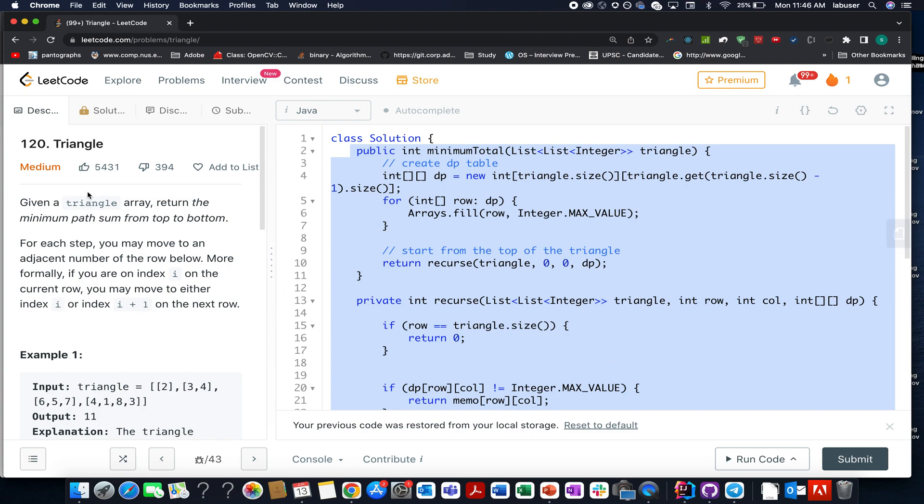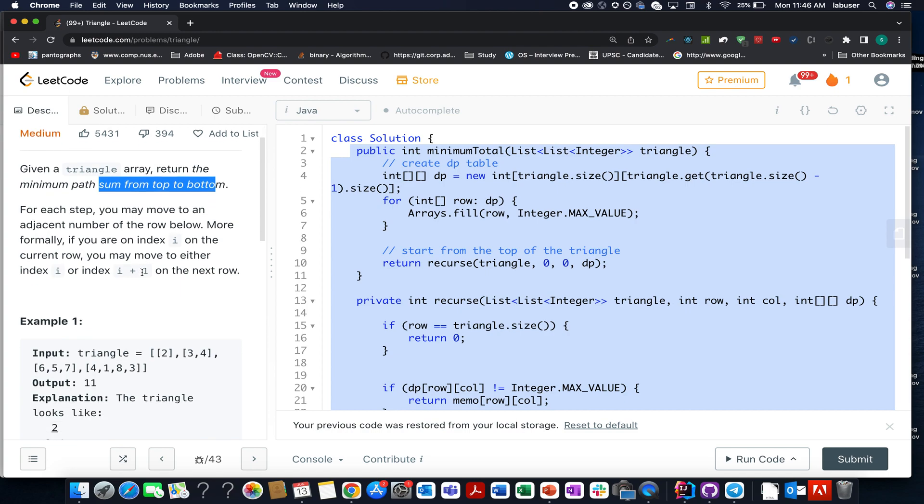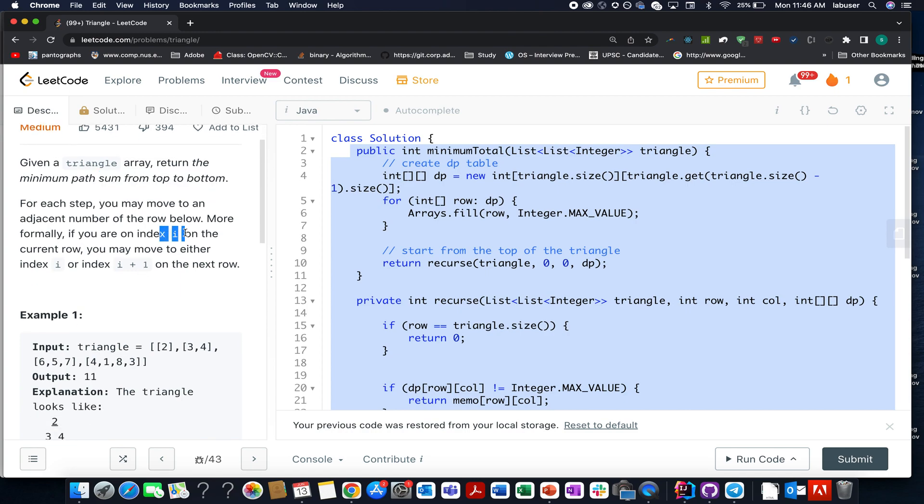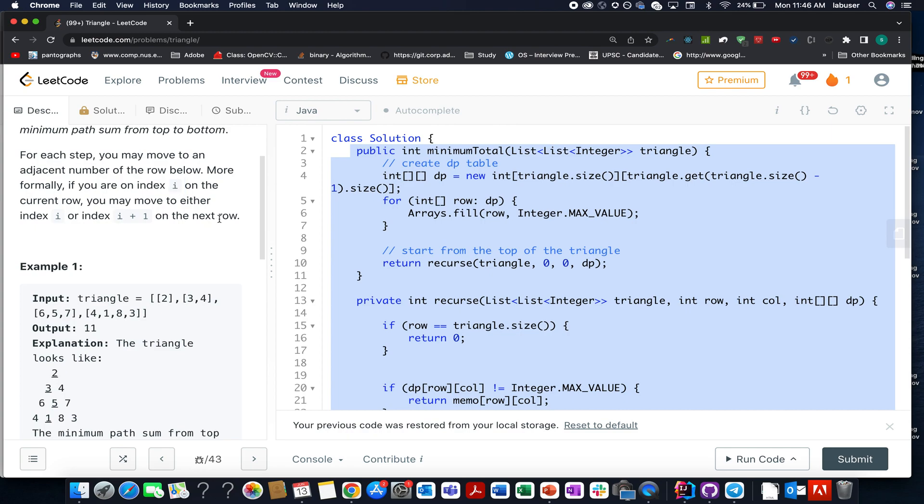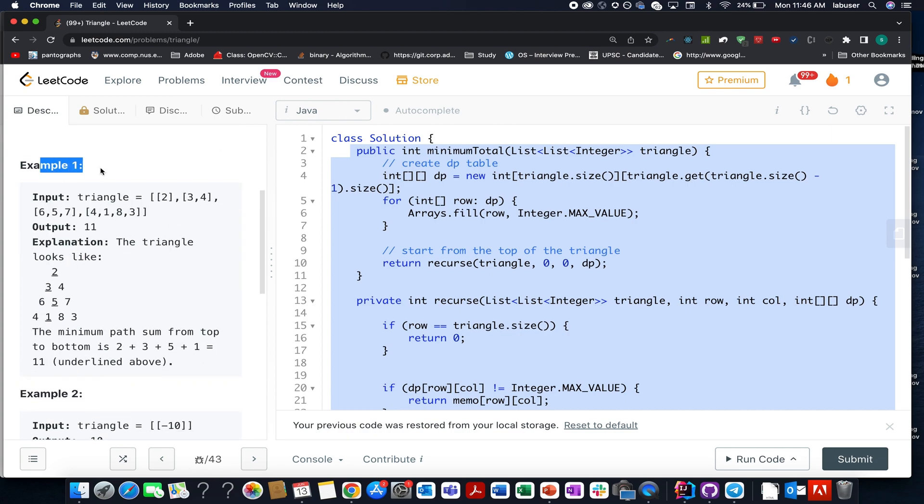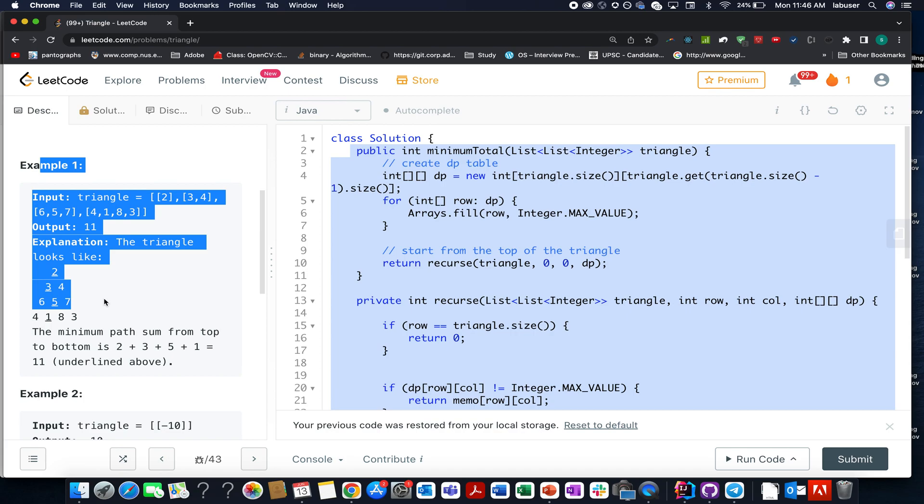So here in this question we are given a 2D array in the form of a triangle and what we need to return, we need to return the minimum possible sum from top to bottom and there is a constraint that is specified in the question. If you are at the ith index then you can only move in two directions, the element just below it or the element just to the right of it in the next row. So this is the crux of the problem, remember these two statements and I will be explaining you this example as well as the algorithm to go about it by the PPT. So let's quickly hop on to it.